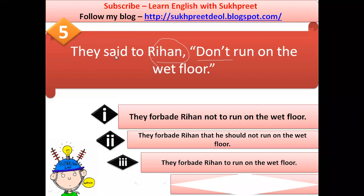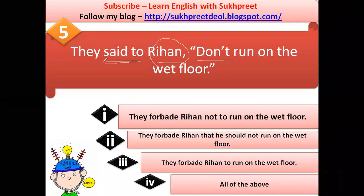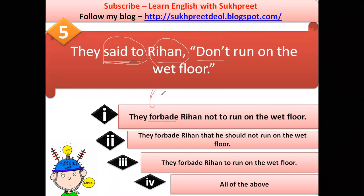Whenever you change 'said to' in indirect speech, you replace it with the appropriate verb in its past form. For advice, change 'said to' to 'advised' or 'suggested'; for an order, change it to 'ordered'; for a forbidding, change it to 'forbade.' 'Forbade' is the past form of 'forbid.' So we use 'forbade' here.